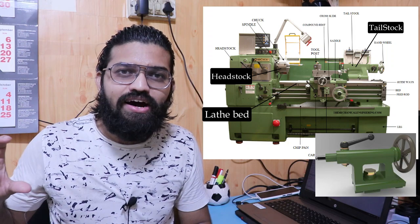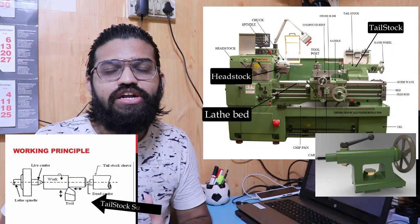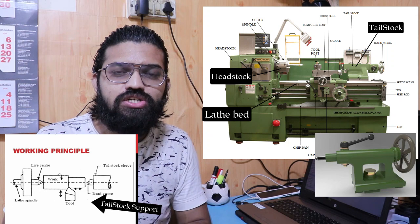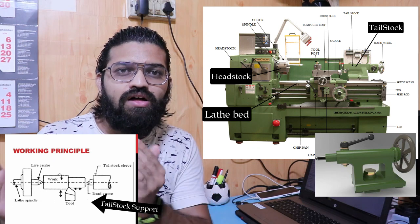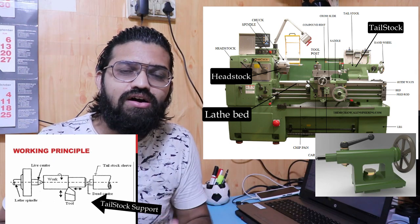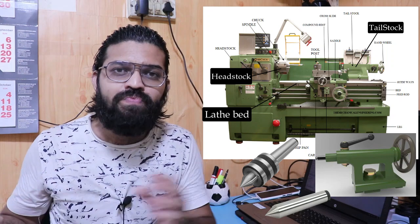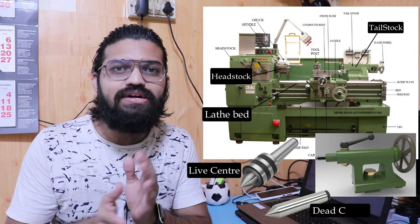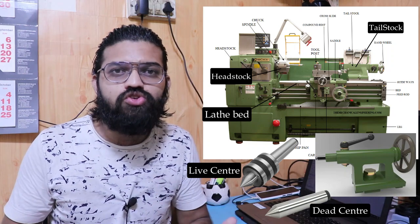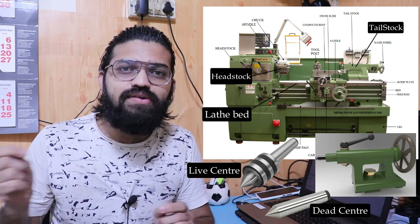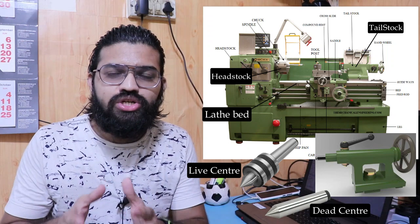Another major component of the lathe machine is the tailstock, located at the other end in front of the headstock. The tailstock also slides over the lathe bed. The main function of the tailstock is to support the workpiece while doing different operations such as turning and taper turning. On the tailstock we can mount a live center as well as a dead center — these are the two attachments used with the tailstock.